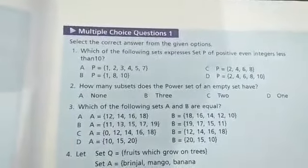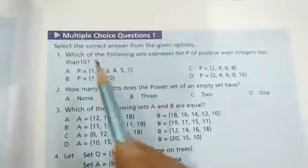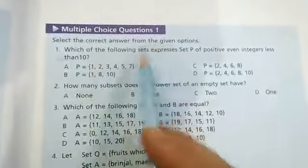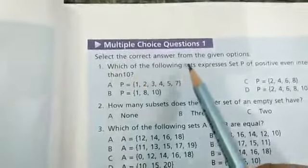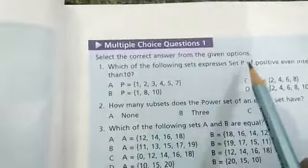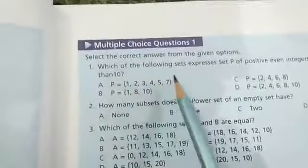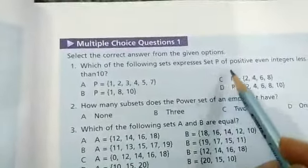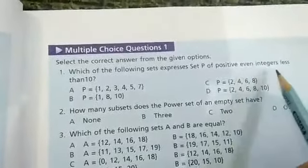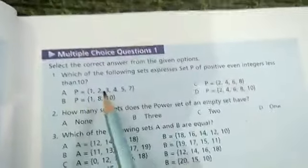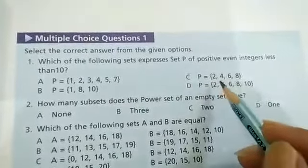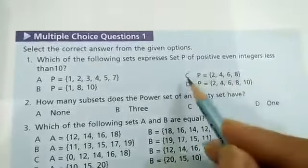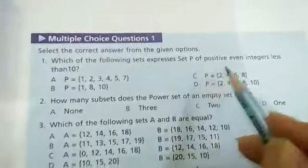Assalamualaikum grade 6. Today we will do multiple choice question number 1 from the first chapter on page number 15. Select the correct answer from the given options. Which of the following set expresses set P of positive even integers less than 10? So option number C is P = {2, 4, 6, 8}. Option C is the correct answer.